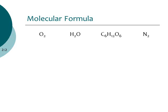At the top we have four different molecules or compounds written with their molecular formulas. O2 means two oxygen atoms bonded together. H2O means two hydrogens and one oxygen. C6H12O6 has six carbons, twelve hydrogens, and six oxygens. And N2 has just two nitrogens bonded together.